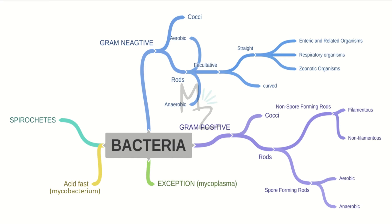Bacteria is further classified on the basis of its structures, biochemical properties, and staining procedures, but I'm just going to tell you the names of bacteria right now. Bacteria is classified into gram negative bacteria, gram positive bacteria, some exceptions, acid fast bacteria — that's mycobacterium, which does not stain with the gram stain — and then we've got spirochetes.